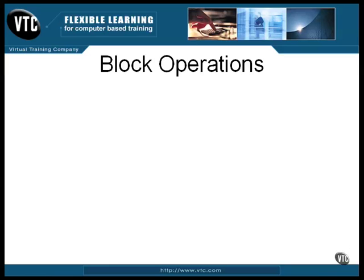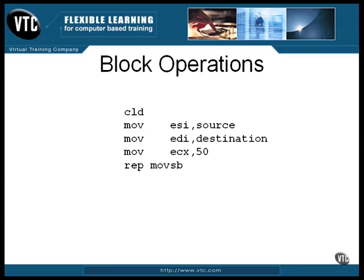This is a continuation of a previous lesson on block operations, and this is the same thing we looked at before, but with the label and loop instructions gone. Instead, an REP — short for repeat prefix — is included in front of the block copy instruction. It does the same thing that was done with the loop: it repeatedly executes the instruction, reducing the ECX register by 1 until ECX is 0.